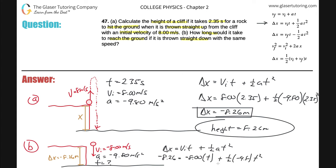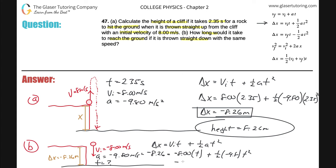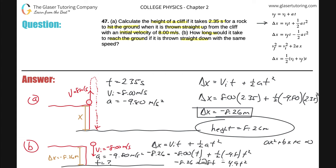Plugging into the displacement formula: negative 8.26 equals negative 8.00 times t, plus one-half times negative 9.8 times t squared, which simplifies to negative 8.26 equals negative 8t minus 4.9t². To get this into quadratic form (ax² + bx + c = 0), add 8t and 4.9t² to both sides, giving: 4.9t² + 8t minus 8.26 equals zero.